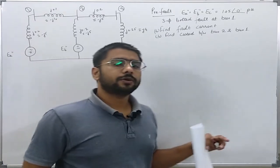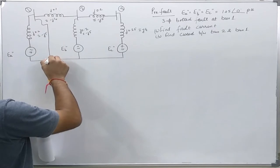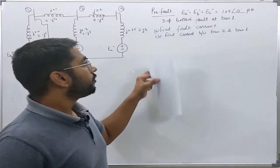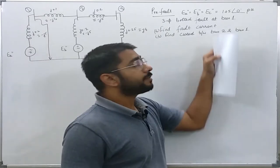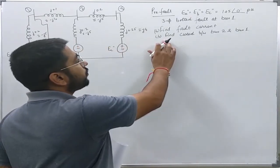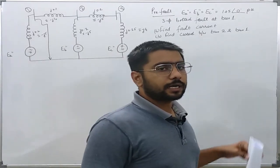Now it is told that there is a bolted fault at bus 1. We are asked to determine the fault current and find the current between bus 2 and bus 1 after the fault occurred.